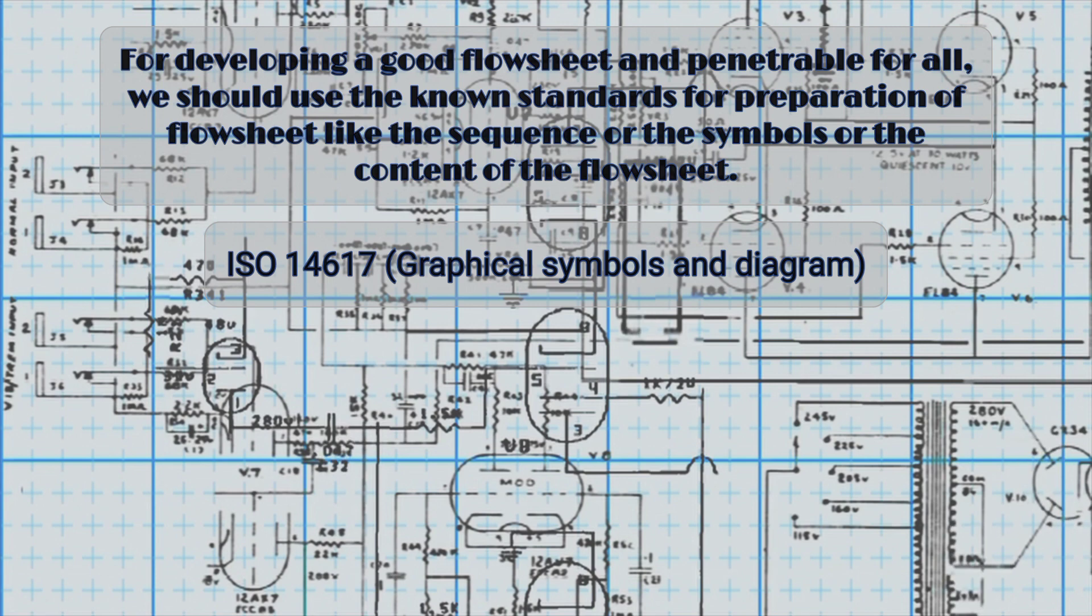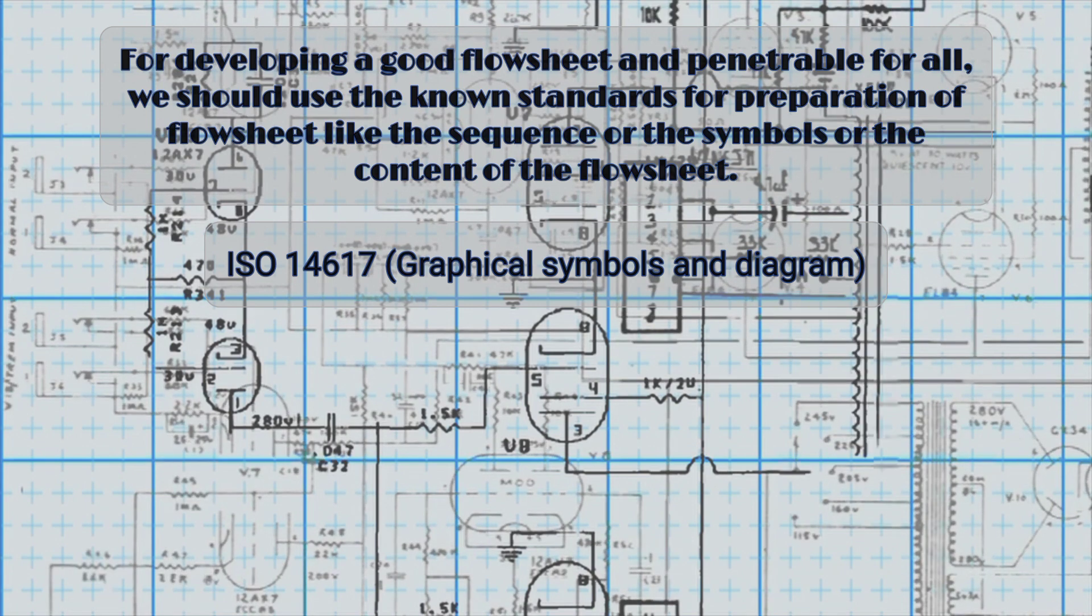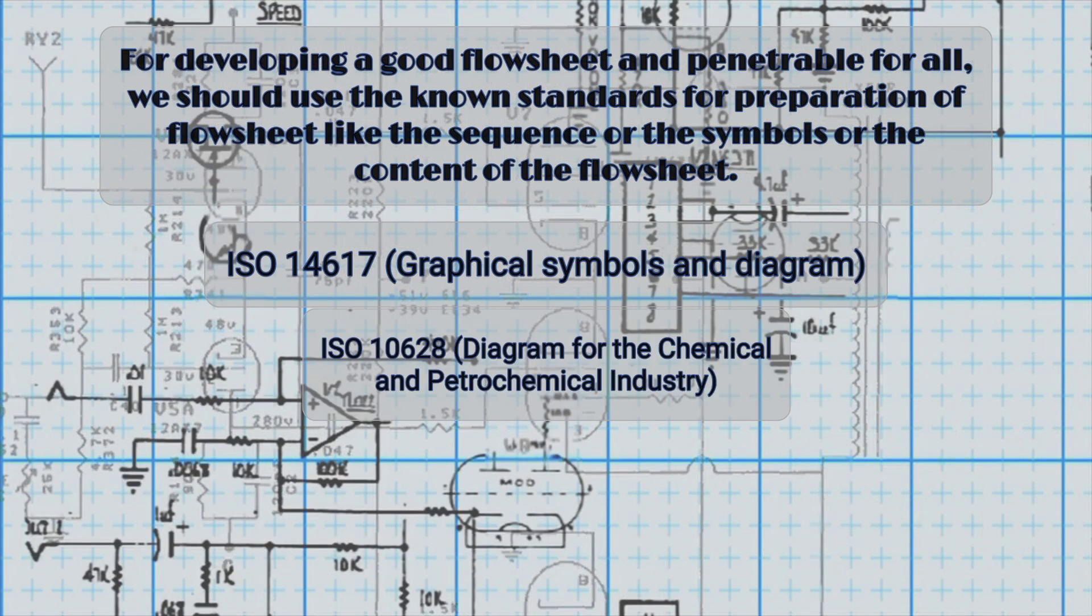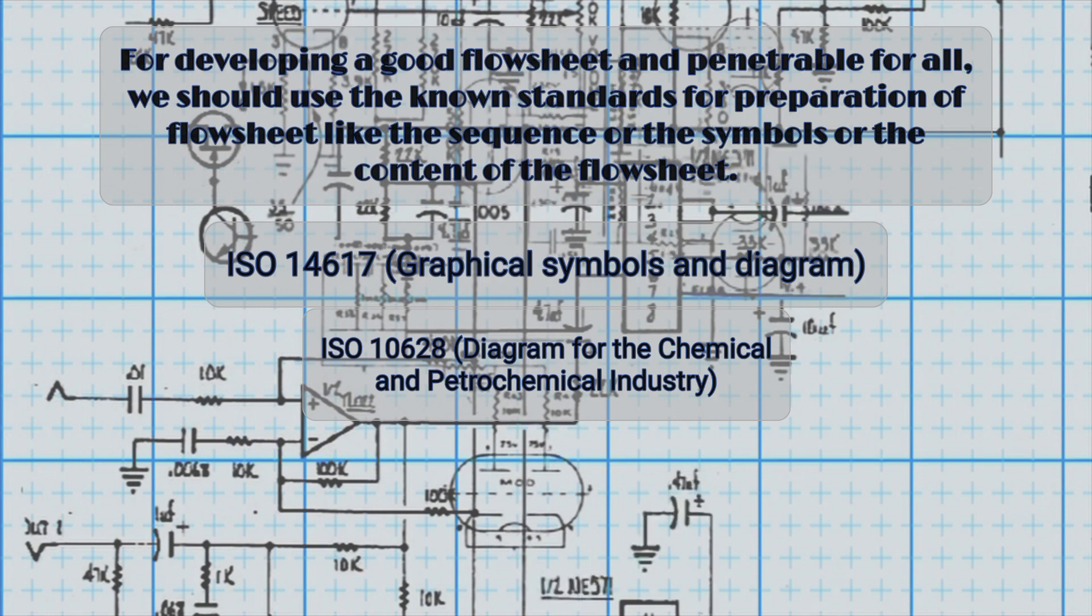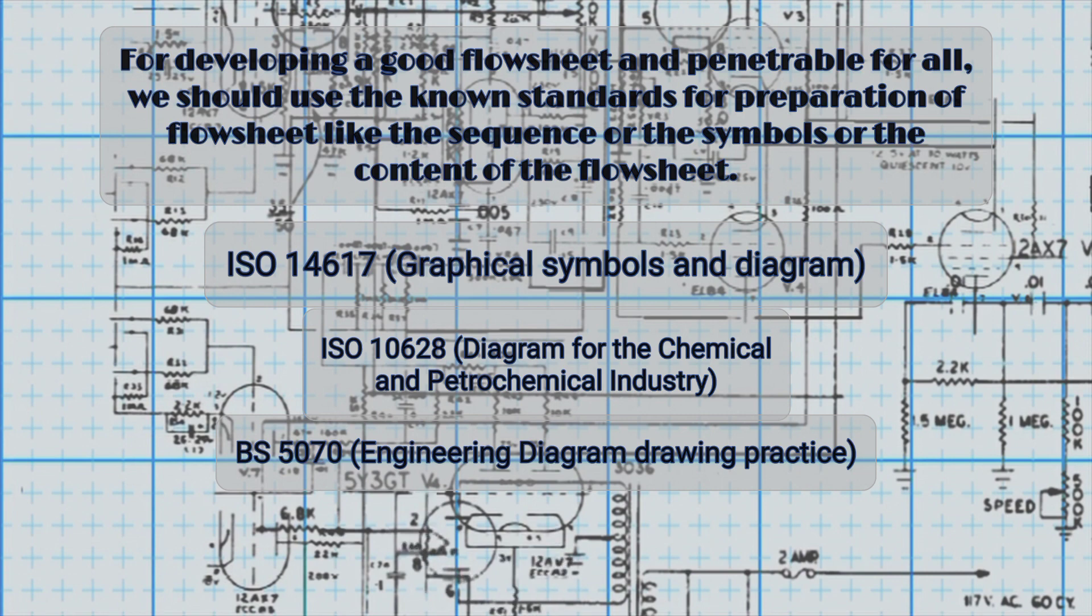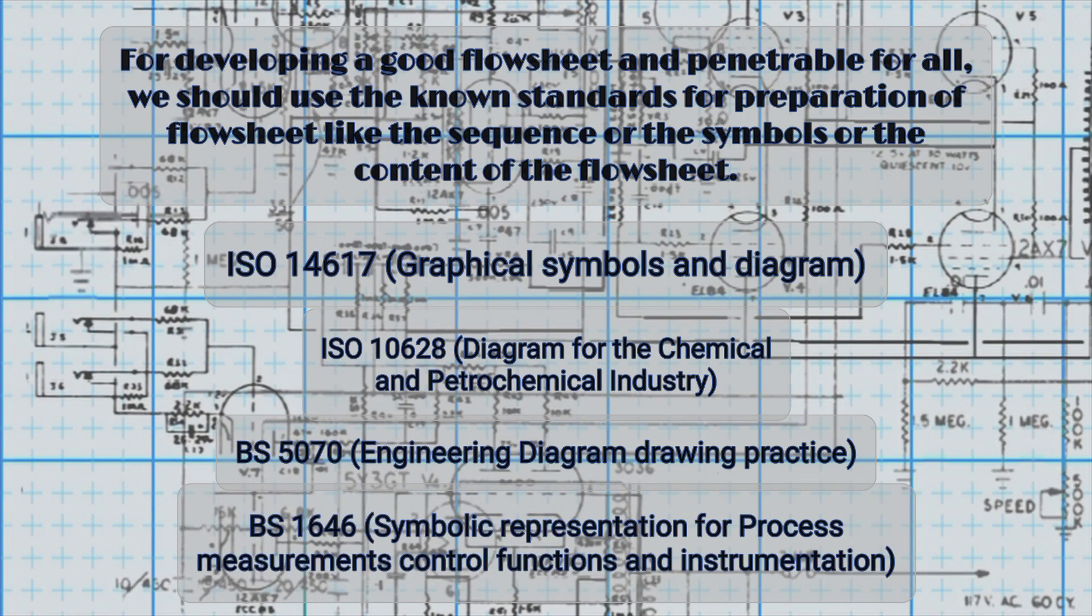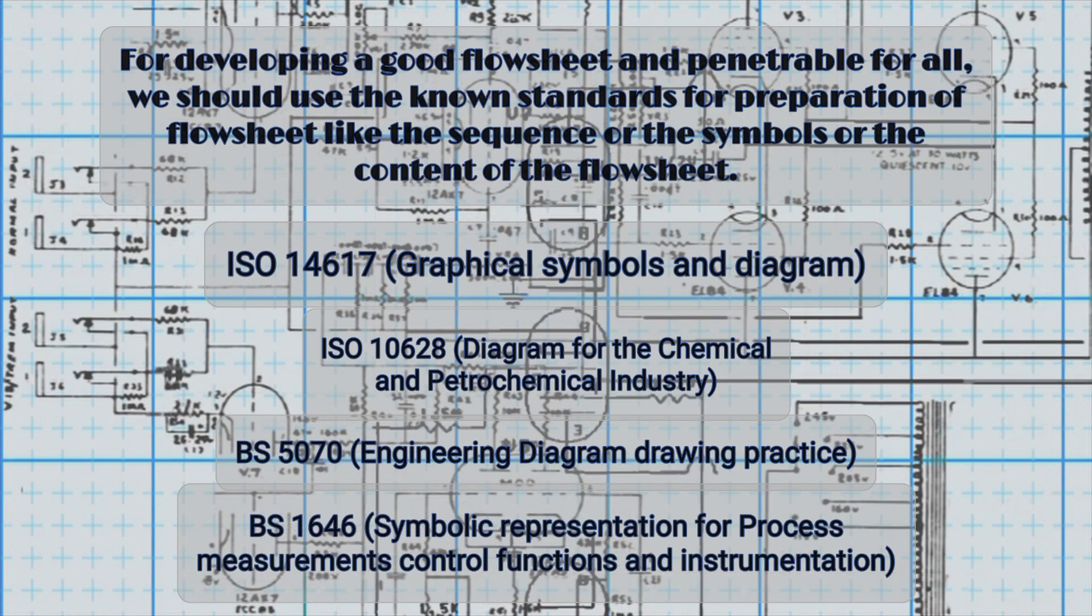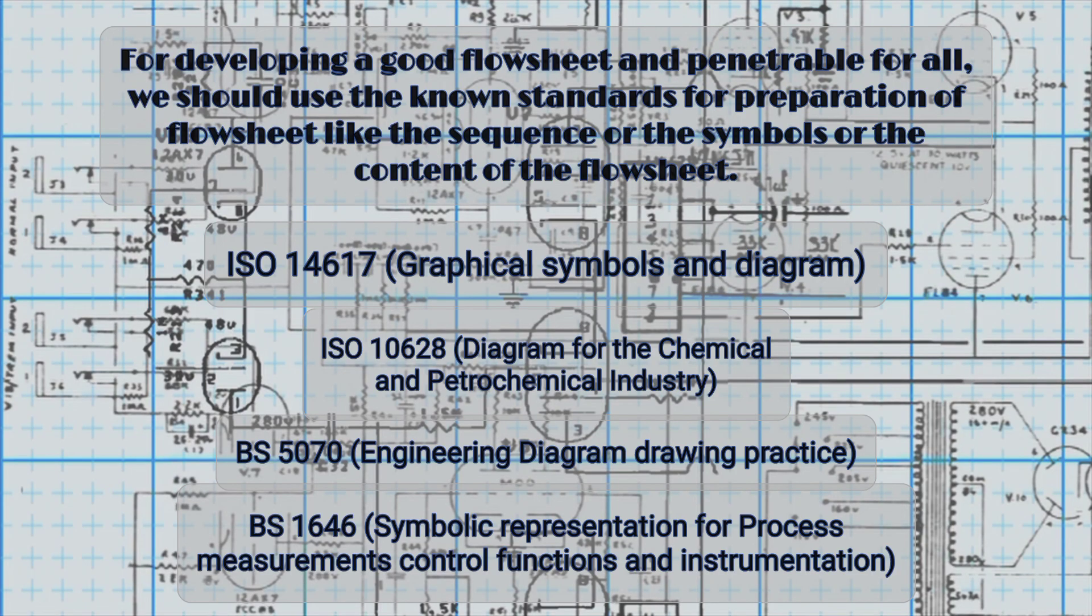ISO 14617, graphical symbols and diagram. ISO 10628, diagram for the chemical and petrochemical industry. BS 5070, engineering diagram drawing practice. BS 1646, symbolic representation for process measurements control functions and instrumentation.